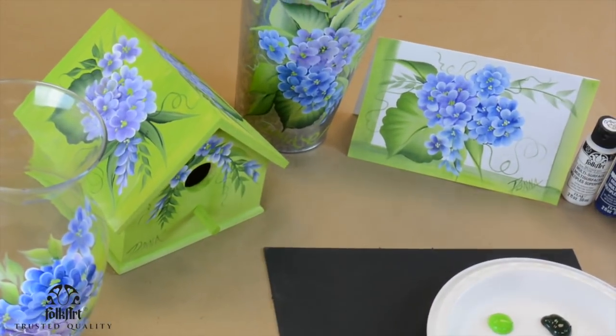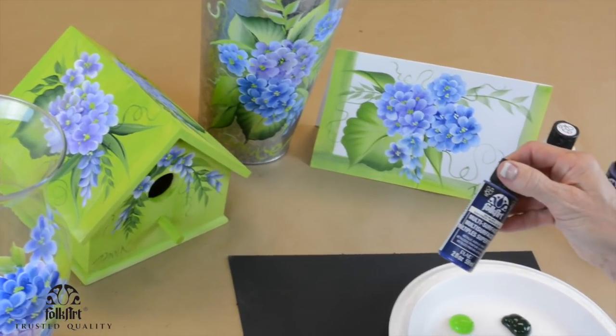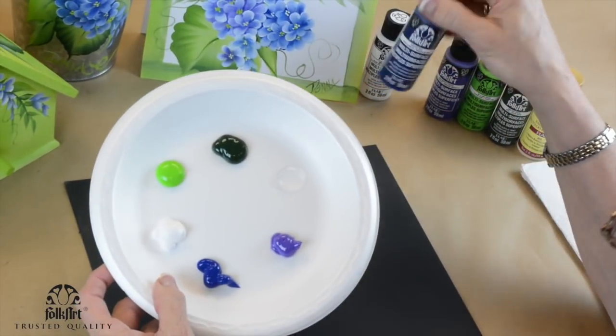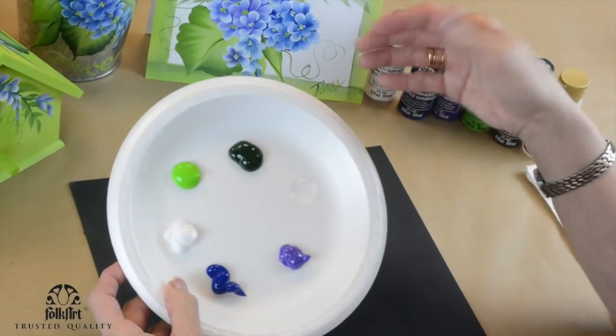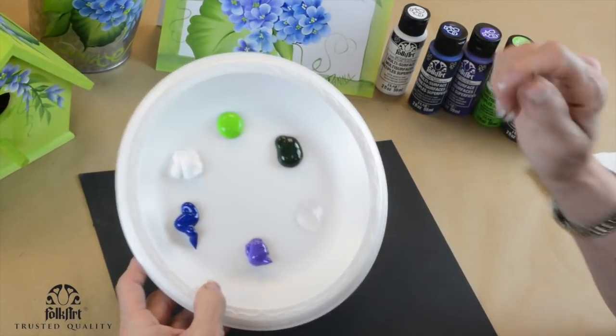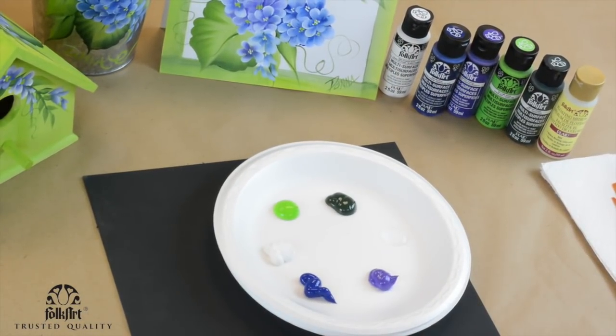From clay pots to metal and wood, I'm doing them all with FolkArt multi-surface paint which I absolutely love. It's got the thick creamy consistency that I use with one stroke. See how fluffy it is? To me it makes it really easy to do one stroke.